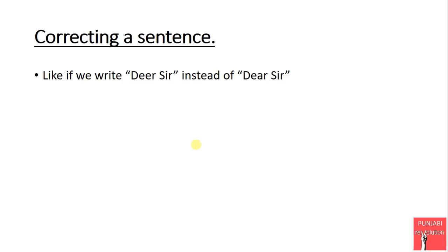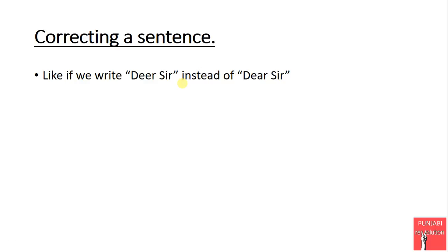For example, if we write 'dear sir' with the wrong 'dear', both words are correct in the dictionary so there's no spelling mistake. The normal word processing application will not identify any error, but an N-gram model will suggest that 'sir' is normally followed by the correct form of 'dear', and will notify us that the phrase is incorrect. So it's very helpful in such scenarios.